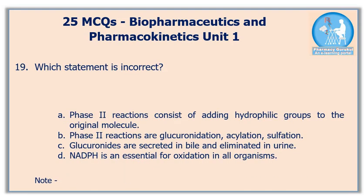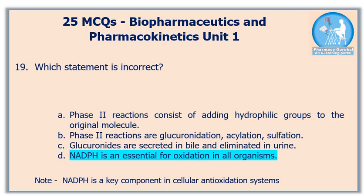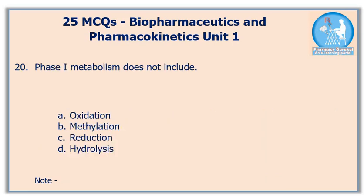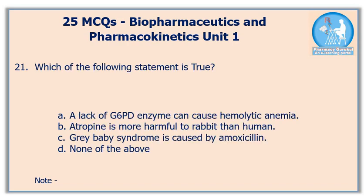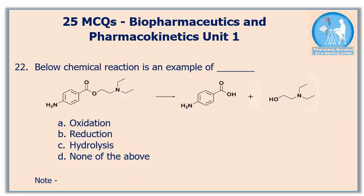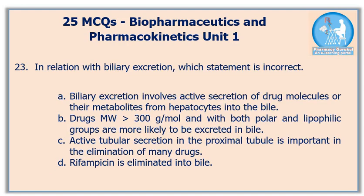Question number nineteen: which statement is incorrect? The correct answer is option D. Question number twenty: beta-1 globulin binds to ferrous ions — the correct answer is option B. Question number twenty-one: which of the following statements is true? The correct answer is option A. Question number twenty-two: the chemical reaction shown below is an example of — the correct answer is option C. Question number twenty-three: in relation with biliary excretion, which statement is incorrect? The correct answer is option C.